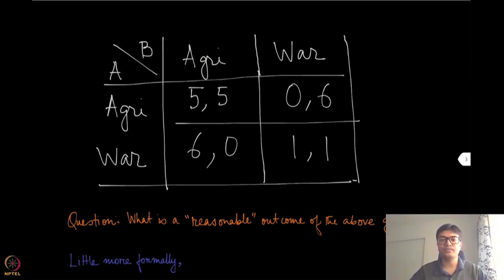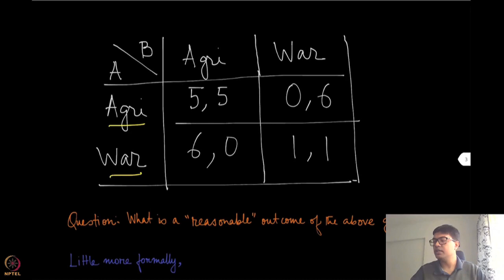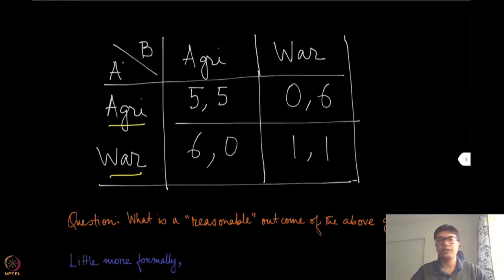So what does this matrix say? There are two rows, and these two rows represent the two available actions of Kingdom A — the first player. Similarly, these two columns represent the actions that are available to the second player, which is player B.